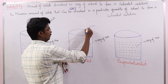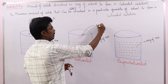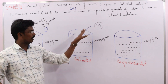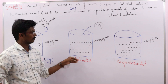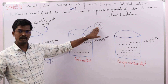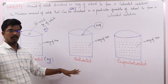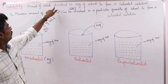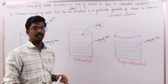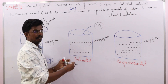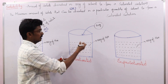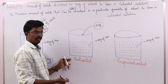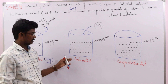Now I am adding 10 grams of solute. The maximum capacity of this solvent is 10 grams, and here I am also adding 10 grams — the total maximum capacity. The amount of solute that dissolves in 100 grams of solvent to form a saturated solution — the saturated solution holds exactly the maximum capacity. So this type of solution we call a saturated solution.